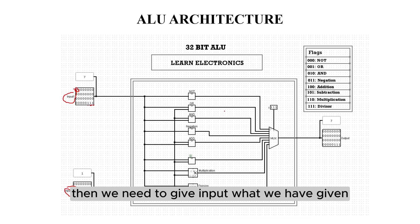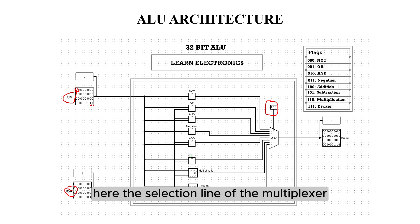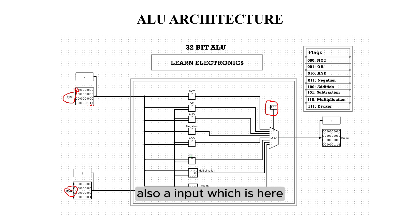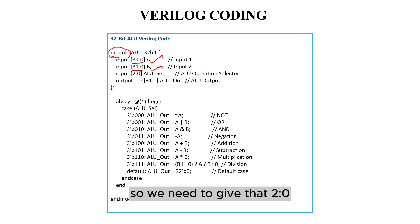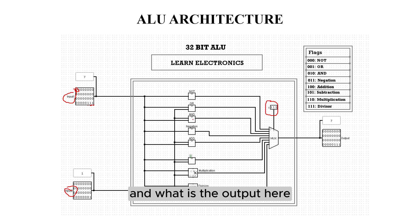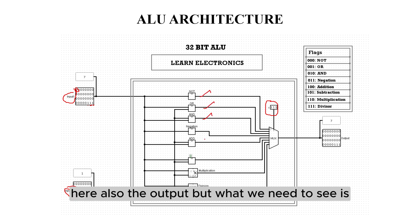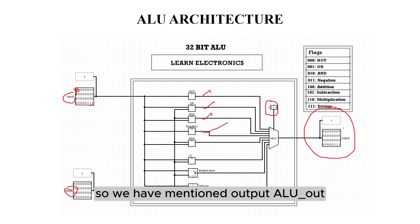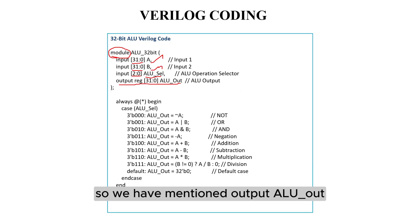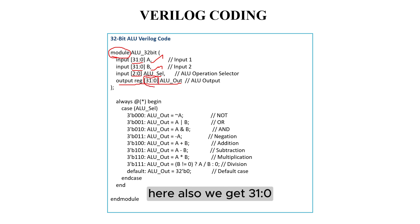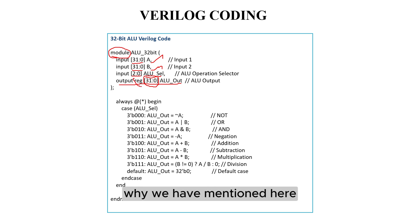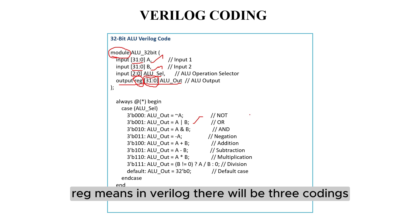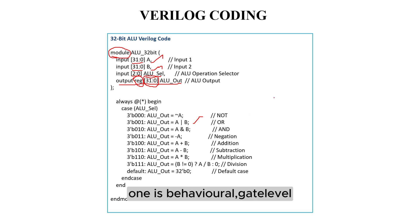Then we need to specify what input we have given. Here the selection line of the multiplexer is also an input. It is 3 bits, so we need to give it as 2 to 0. We can also give it as 3 to 1. This is the ALU selection input. The output is also declared here — we have mentioned output ALU_out, which is 31 to 0, indicating a 32-bit ALU output.